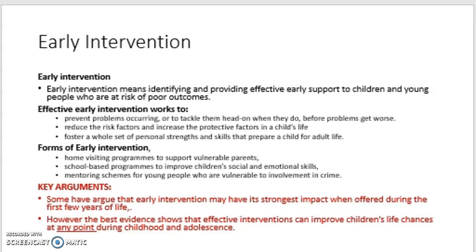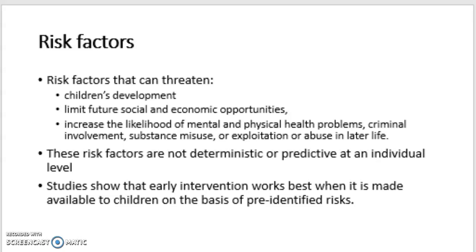So there's not this position of 'it's too late' — there's always something that can be done. There are a number of risk factors that can threaten a child's development, limit their future socioeconomic opportunities, or increase the likelihood of mental health and physical health problems, criminal involvement, or substance misuse. However, these risk factors are not deterministic or predictive at an individual level, and that's very important to remember. Studies show that early intervention works best when it's made available to children on the basis of pre-identified risks.